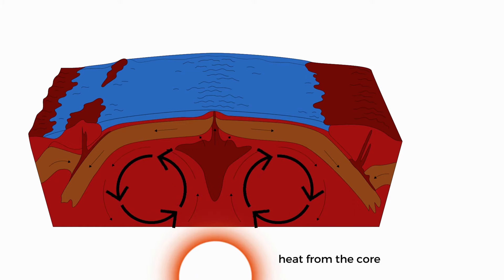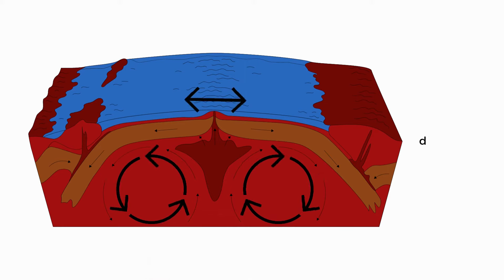Like I said earlier, the magma in the mantle heats up and rises towards the crust. In this case, the currents are diverging, which means they are separating.